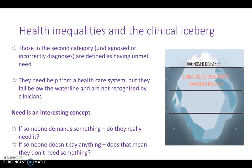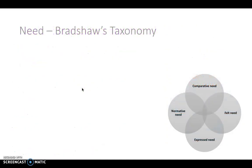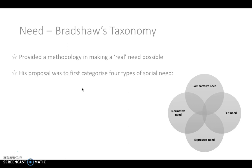Last time we finished by looking at need, and we said that need is an interesting concept. If someone demands something, do they really need it? And if someone doesn't say anything at all, does that mean they don't need something? Well, Bradshaw tried to describe need and provided a methodology for making real need identifiable. His proposal was to first categorise the four types of social need: comparative need, felt need, normative need, and expressed need.